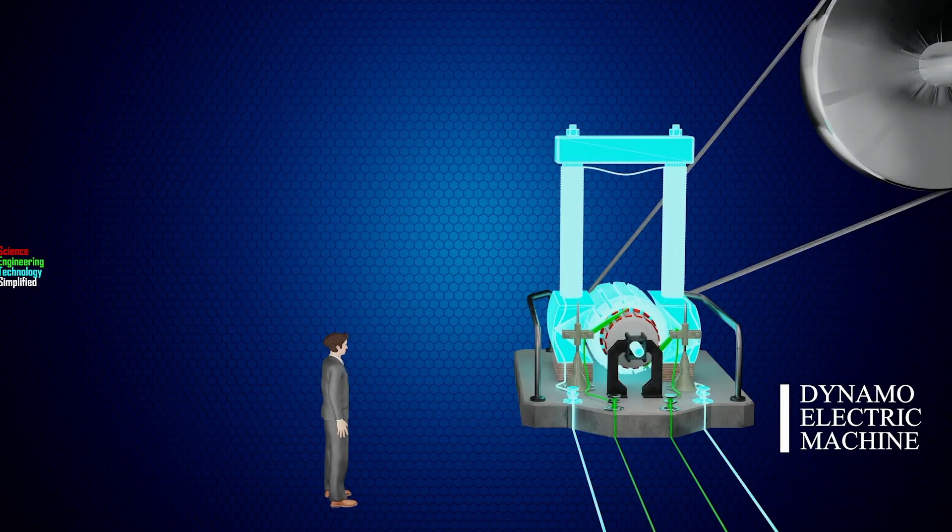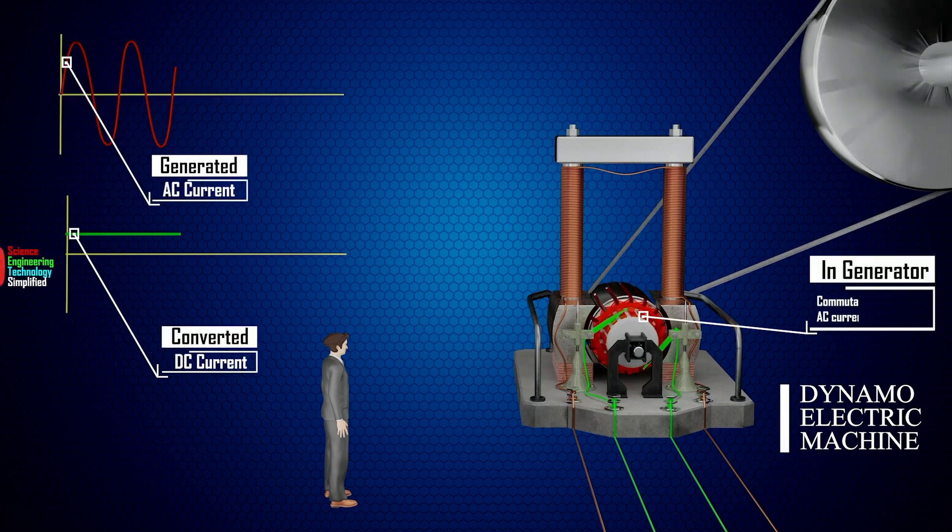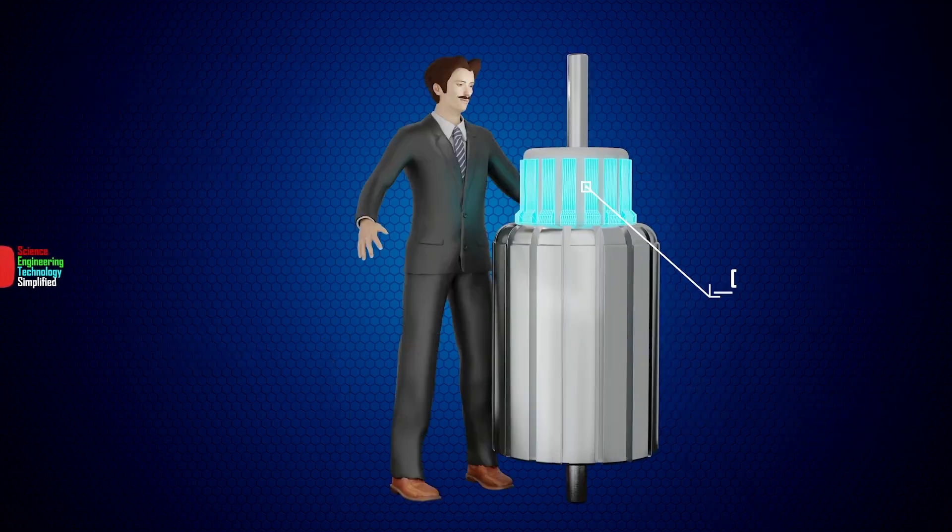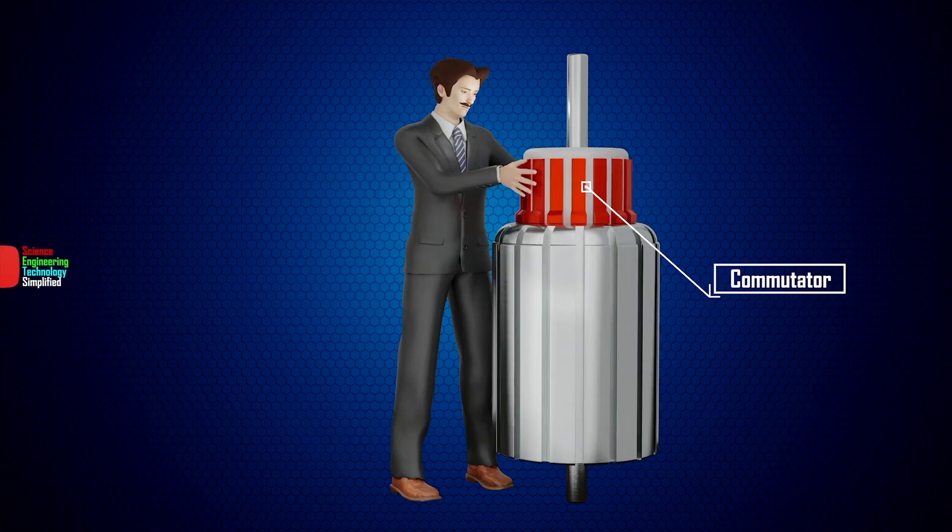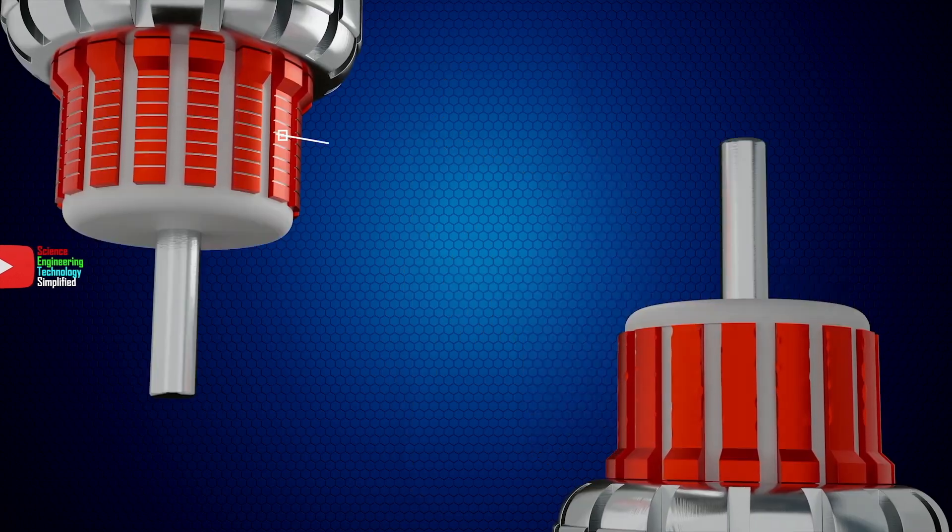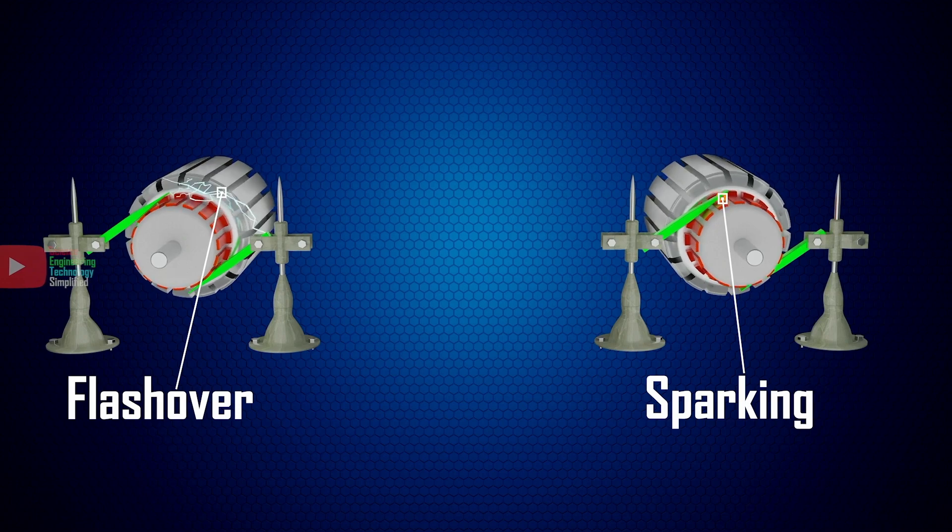Nikola Tesla observed that dynamo-electric machines were generating alternating current, which was converted to direct current with the help of a commutator. This commutator was a complicated device and was the source of most of the troubles experienced in the operation of the machines. Problems like threading, copper track flashovers, and sparking were common with the use of a commutator.